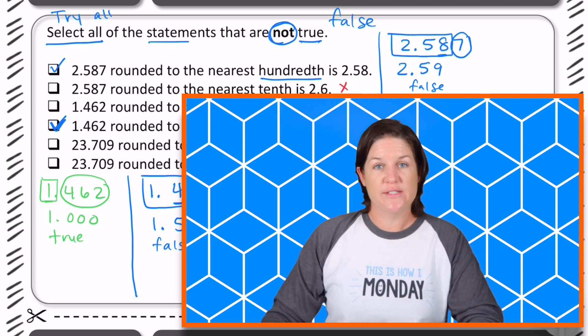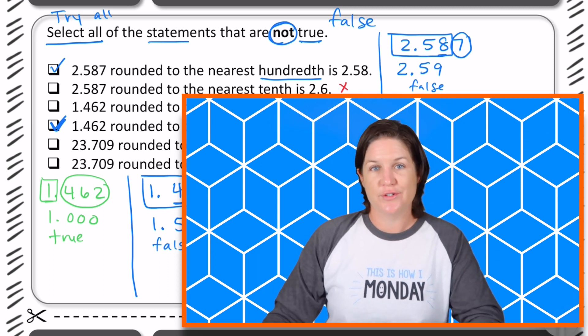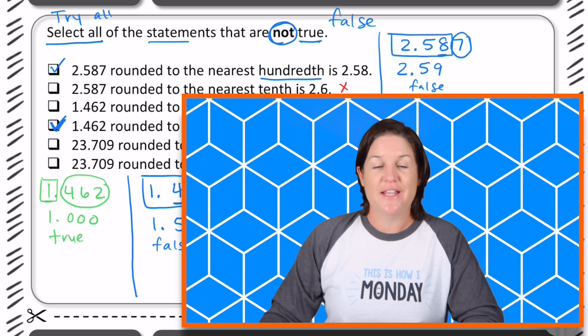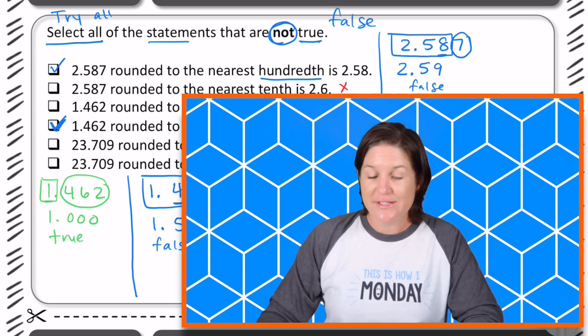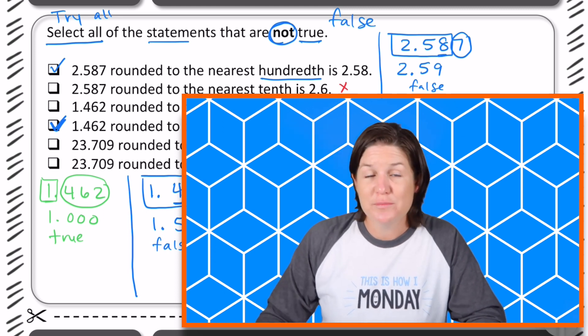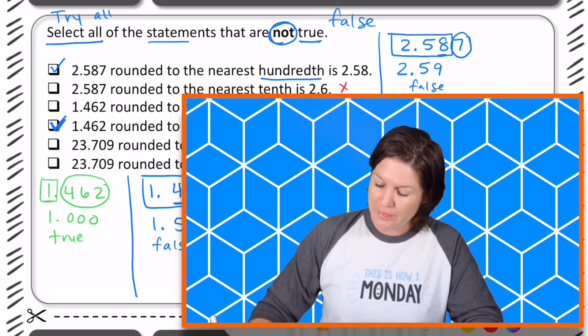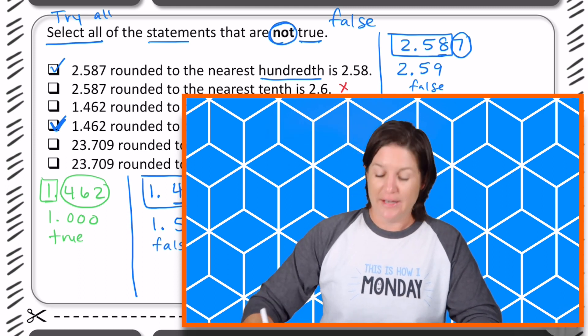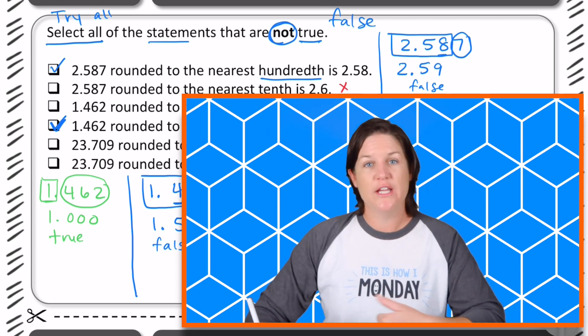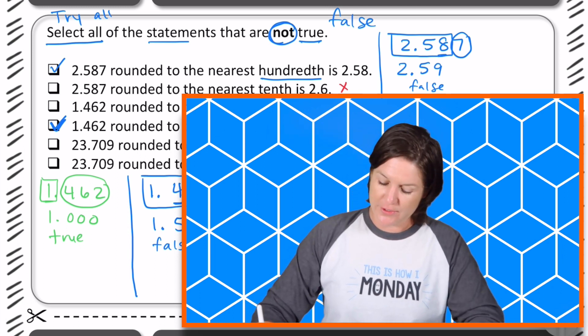Now, a lot of students with multi-select, they'll find two answers and then they'll stop investigating the other ones. Don't do that. Sometimes it could be, it doesn't have to just be two answers. It could be more than that. So we need to make sure that we really go through and think mathematically and have some reasoning of why we're keeping or eliminating our answer.